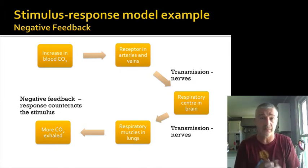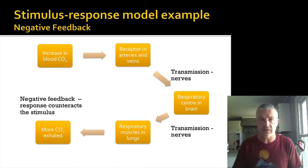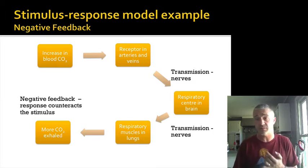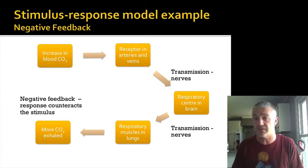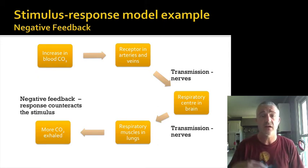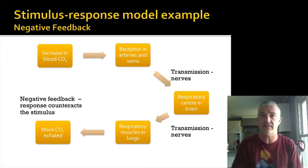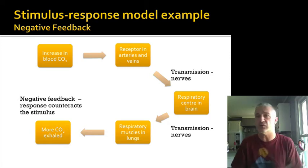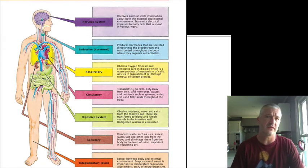A key example of a negative feedback loop: blood CO2 goes up, receptors in the arteries, veins, and cerebrospinal fluid recognize this and send the information to the respiratory center in the brainstem. It compares with the normal set point, detects it's out of range, and sends a message to the respiratory muscles to breathe more often and more quickly. This exhales more CO2, which decreases blood CO2 levels, eventually stopping the respiratory center from sending that response.